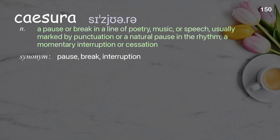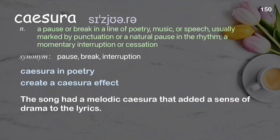Caesura: a pause or break in a line of poetry, music, or speech, usually marked by punctuation or a natural pause in the rhythm; a momentary interruption or cessation. Examples: caesura in poetry, create a caesura effect. The song had a melodic caesura that added a sense of drama to the lyrics.